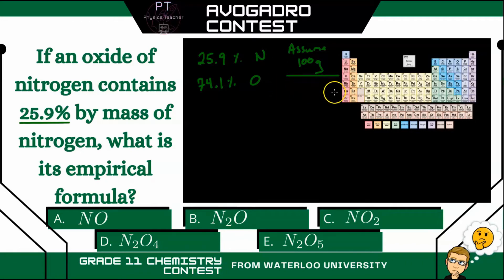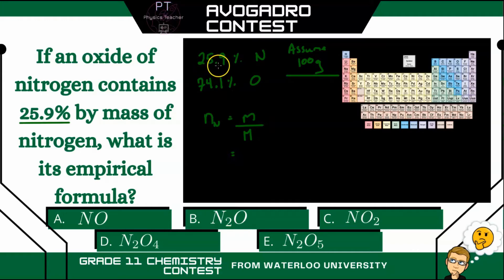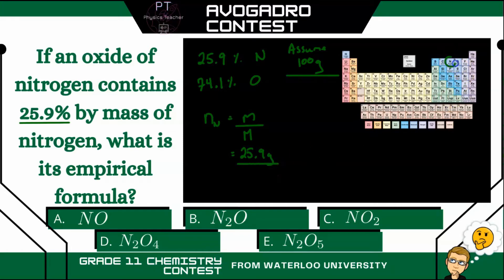So let's start with nitrogen. We're going to find the number of moles of nitrogen — that's going to equal the mass of nitrogen divided by its molar mass. The mass of nitrogen is 25.9% of 100 grams, which is just 25.9 grams. Divided by the molar mass of nitrogen, which is 14.01 grams per mole, that gives us 1.85 moles.